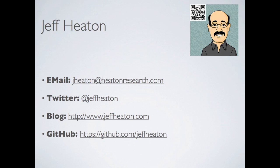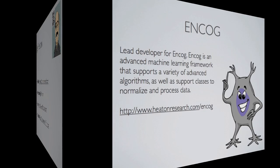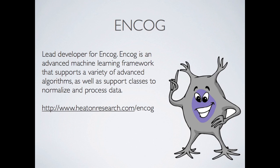My name is Jeff Heaton. You can see my basic contact information here with the email, Twitter, blog, and GitHub. All of the code that you will see in this presentation is stored on GitHub. Something else that I am known for is the NCOG Open Source Machine Learning Framework. This does make use of GPUs for some training algorithms, though it's mostly experimental at this point in NCOG. NCOG makes use of neural networks, hidden Markov models, support vector machines, and many other machine learning algorithms. You can see the link here to find out more information about NCOG.